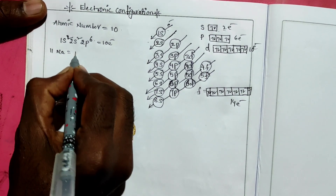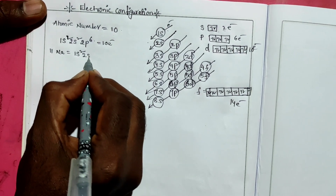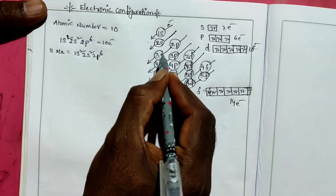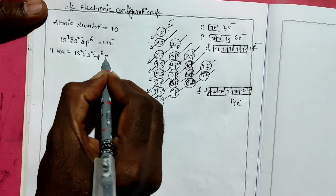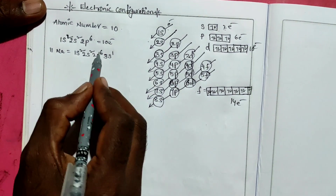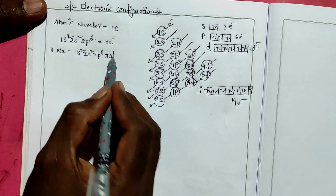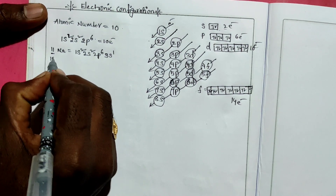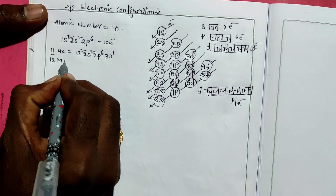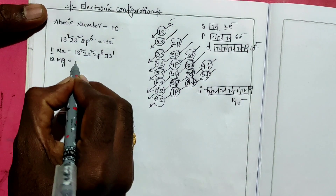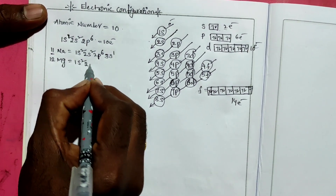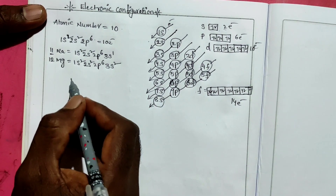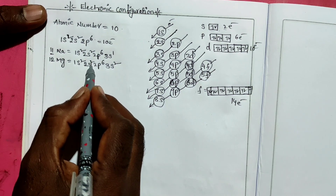Atomic number 11 is sodium. Electronic configuration: 1s2, 2s2, 2p6, then the next electron enters 3s1. So: 6 + 2 = 8, 8 + 2 = 10, 10 + 1 = 11 electrons total — that is sodium. Atomic number 12 is magnesium: 1s2, 2s2, 2p6, 3s2. That gives 2 + 2 + 6 + 2 = 12.